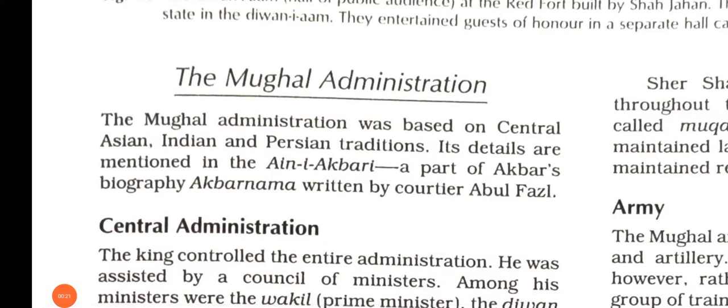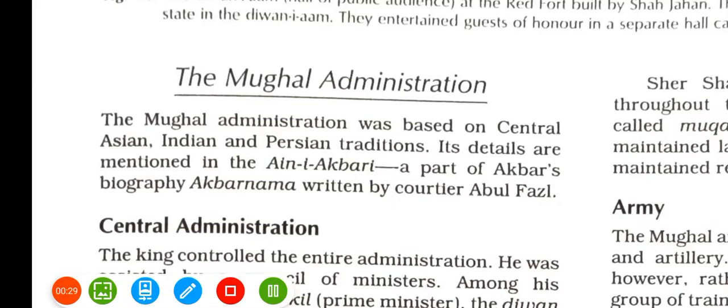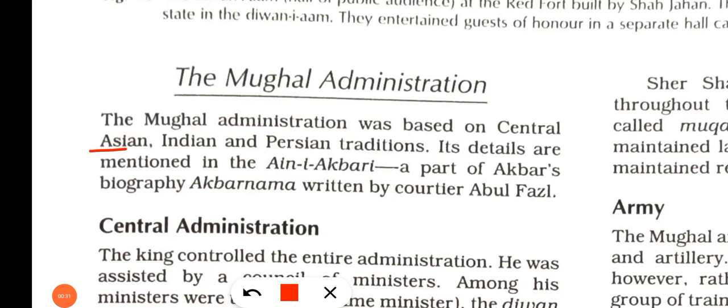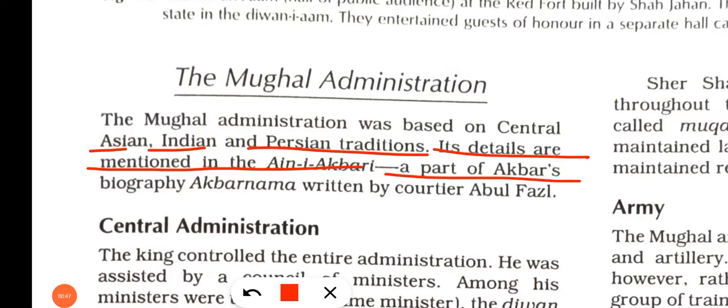The Mughal Empire was so large that it required a well-organized administration. The Mughal administration was based on a fusion of Central Asian, Indian, and Persian traditions. Details of this administration are mentioned in Ain-i-Akbari, which is part of Akbar's biography, the Akbarnama.